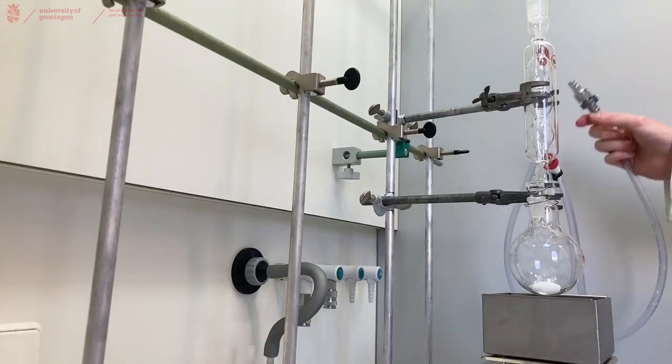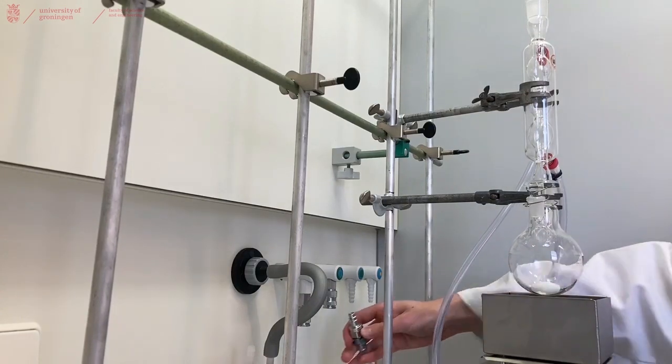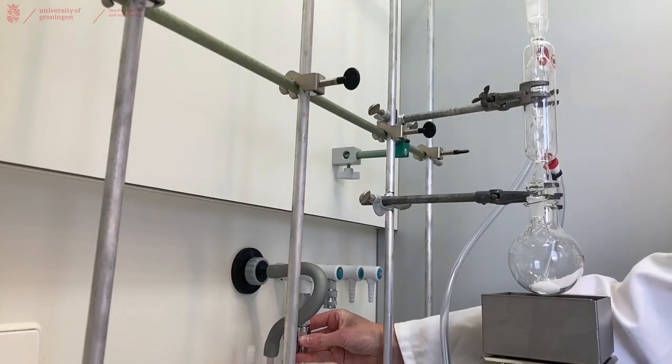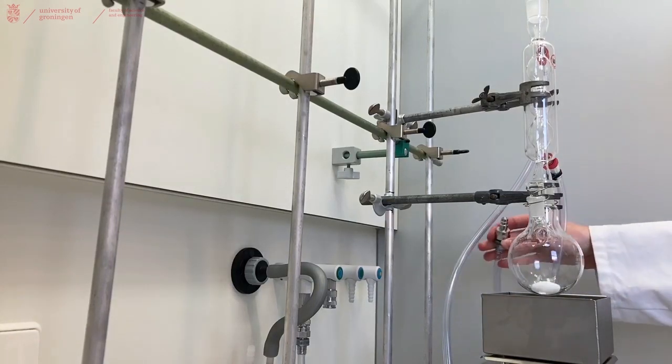Attach the top hose to the water outlet or the sink in your fume hood and attach the bottom hose to the tap or the water inlet in your fume hood.